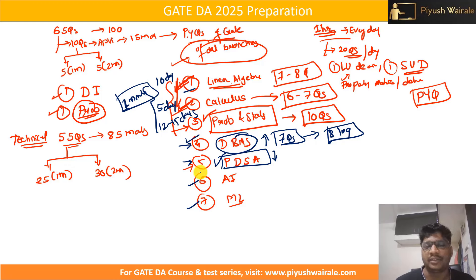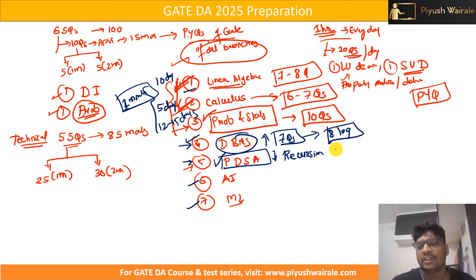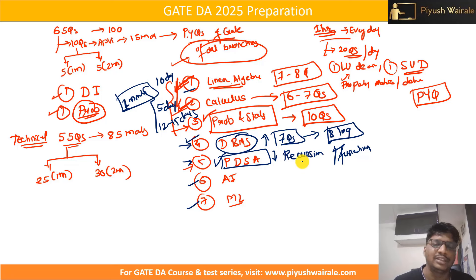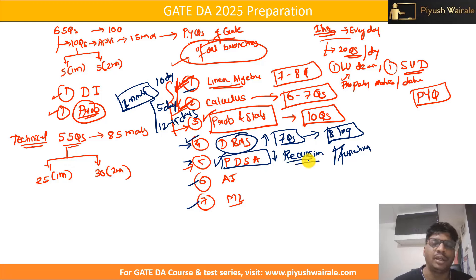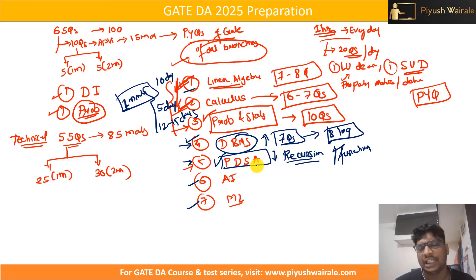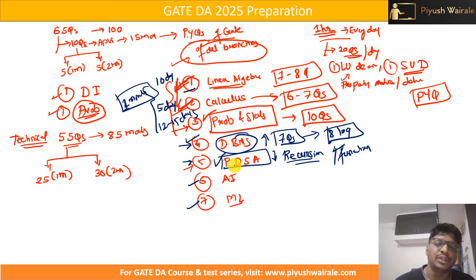For PDSA, focus on the Python part — especially recursion and functions. First learn functions, then study recursion. In the previous GATE DA paper, two questions were asked based on recursion, so it's a very important topic. Then go through the data structures and algorithms syllabus — you can expect one question from each topic like searching algorithms, sorting algorithms, and graph theory.